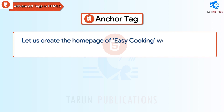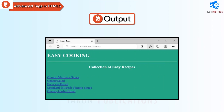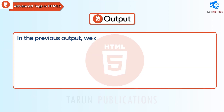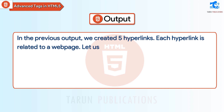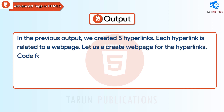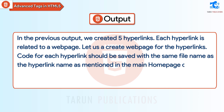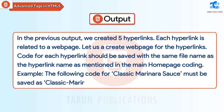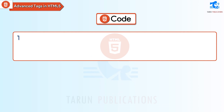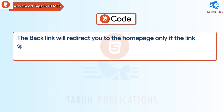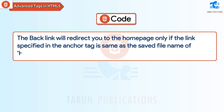Let us create the home page of an easy cooking website. In the previous output, we created 5 hyperlinks. Code for each hyperlink should be saved with the same file name as the hyperlink name as mentioned in the main home page coding. For example, the following code for Classic Marinara Sauce must be saved as classic-marinara-sauce.html on the system. The backlink will redirect you to the home page only if the link specified in the anchor tag is the same as the saved file name of the home page code, i.e., hyperlink.html.